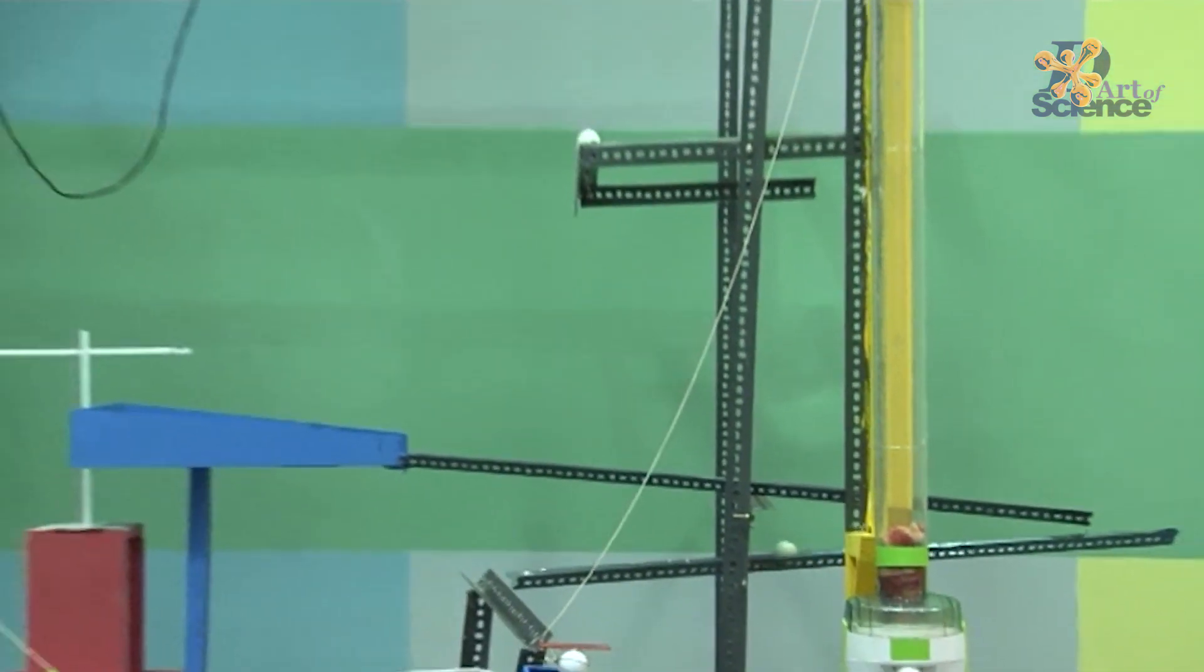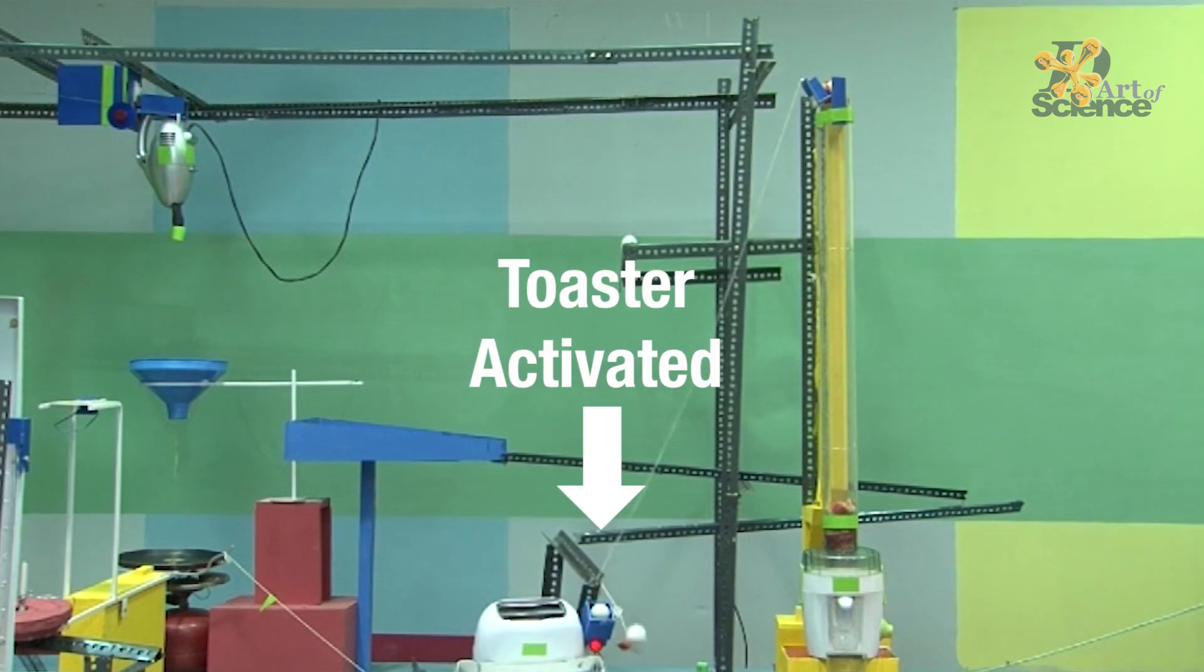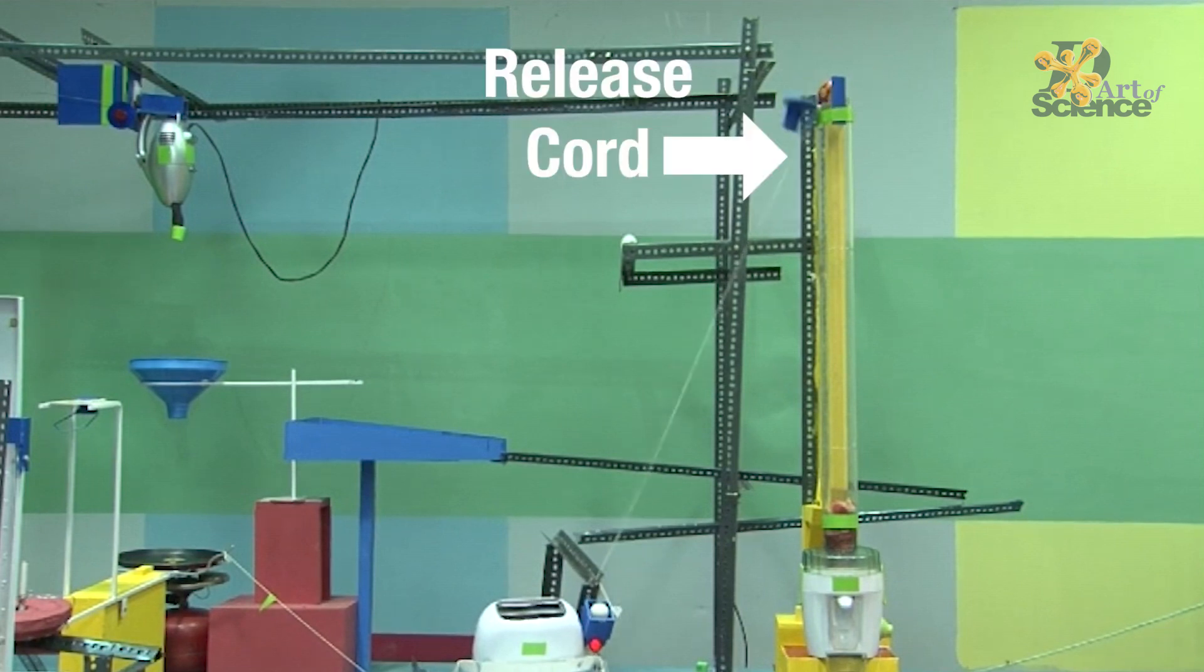The ball falls in the cup that activates the toaster which has two slices of bread. Remember, now the toaster also needs some time to heat the bread, so the next parts are also deliberately slowed down.